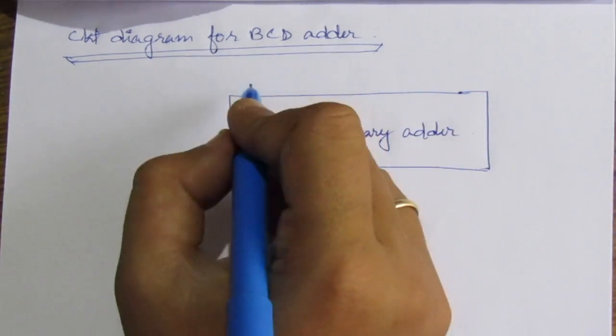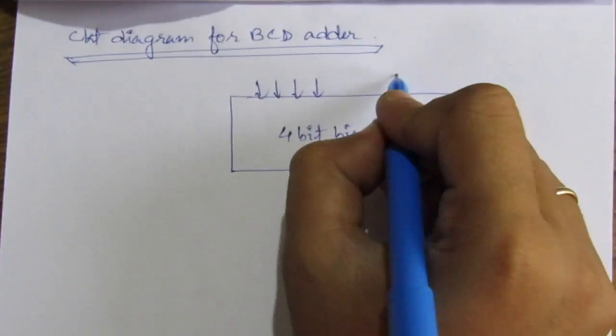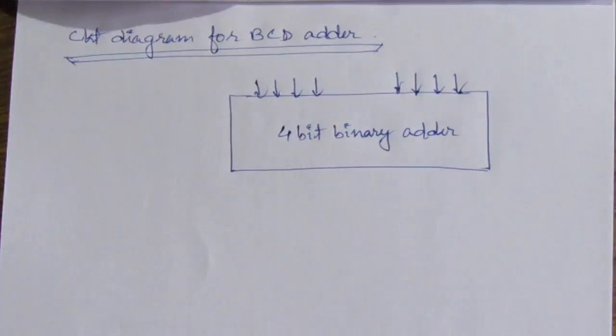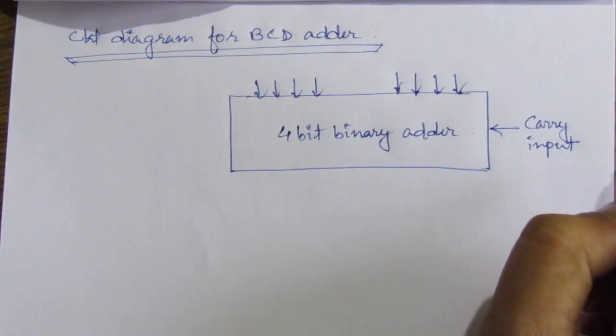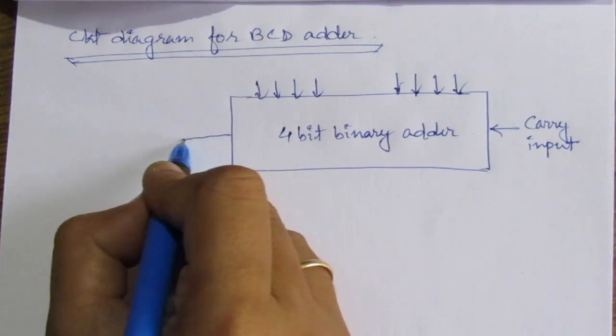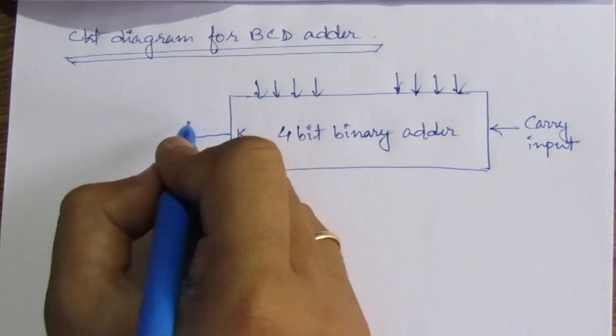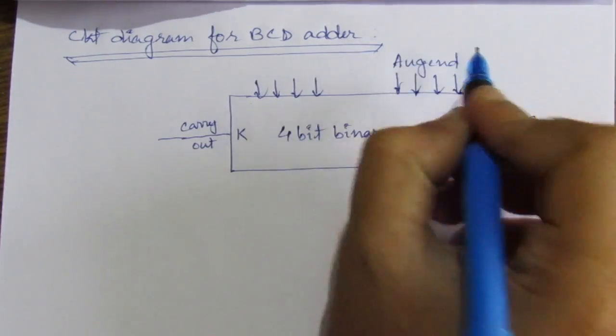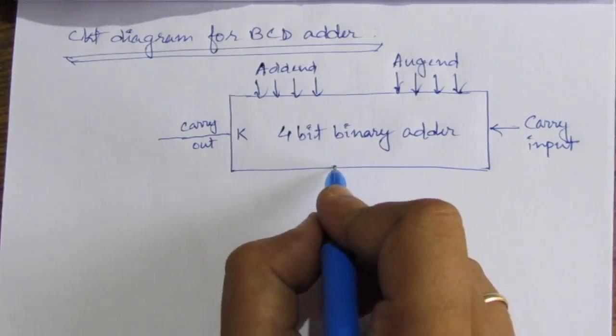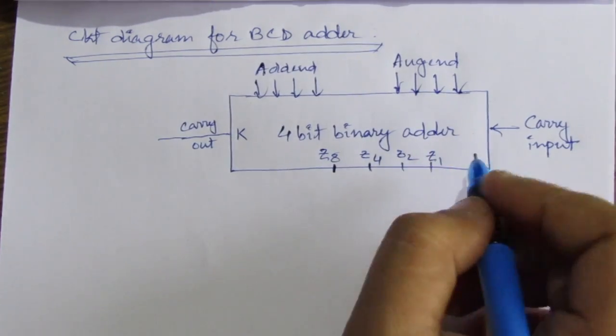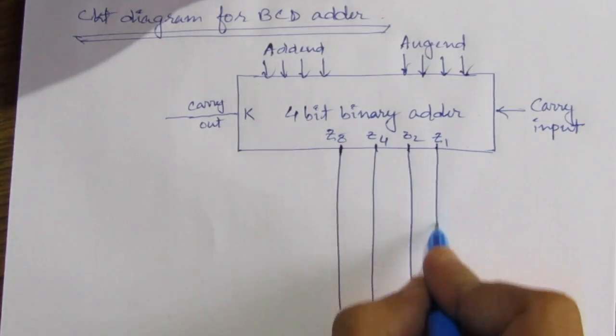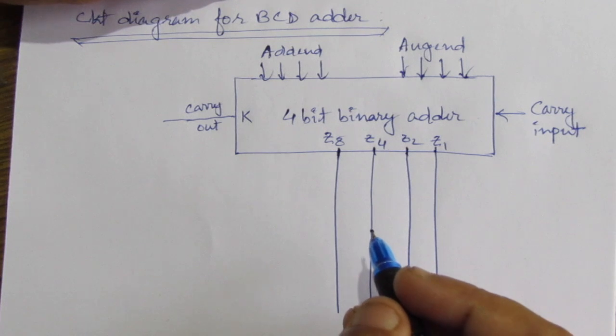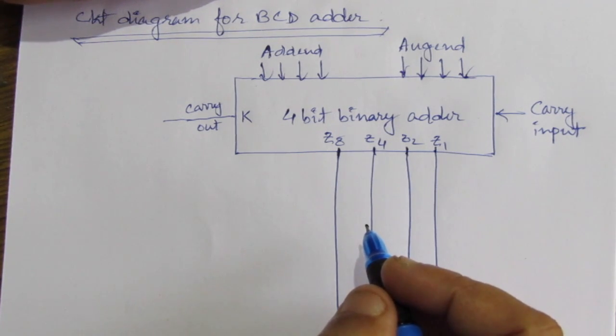We have two 4-bit inputs and one carry input. And here we have carry out. We have these four output lines. We need to find out the expression for c, that means carry in the case of binary coded decimal sum.